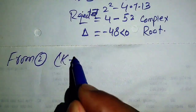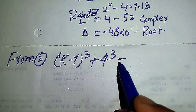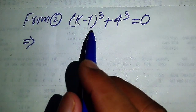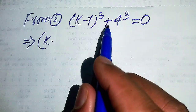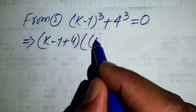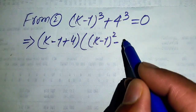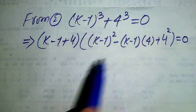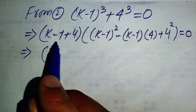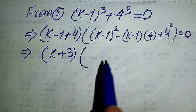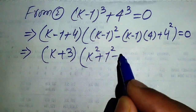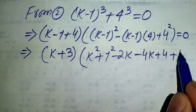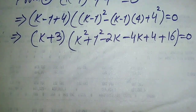We now move to equation number two: (k-1)³ + 4³ = 0. We use the cubic sum formula: a³ + b³ = (a + b)(a² - ab + b²), with a = (k-1) and b = 4. This gives (k-1+4) times [(k-1)² - 4(k-1) + 4²] equals 0, which becomes (k+3)(k² - 2k - 4k + 1 + 4 + 16) = 0.